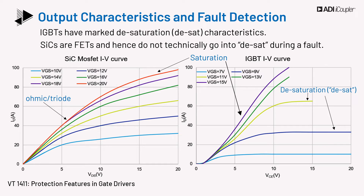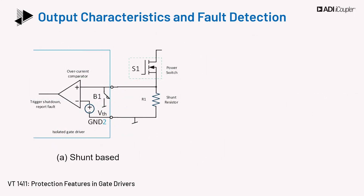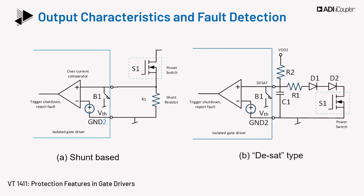There are two typical methods to detect a fault on a SiC device. The current shunt-based method can be used for SiC devices due to their IV curve, but it adds extra losses to the system. Most customers prefer a desat-type short circuit protection, commonly called SCP, as the mechanism for silicon carbide. The desat detection circuit is integrated in some of the ADI gate drivers.